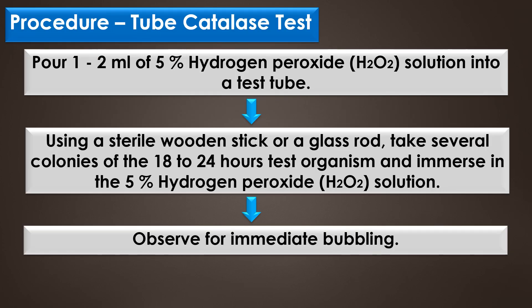Procedure for the tube catalase test: First, pour one to two ml of 5% hydrogen peroxide solution into a test tube. Then, using a sterile wooden stick or glass rod, take several colonies of the 18 to 24-hour-old test organism and immerse them in the 5% hydrogen peroxide solution. Finally, observe for immediate bubbling or bubble formation.